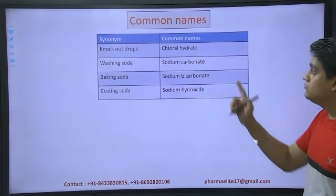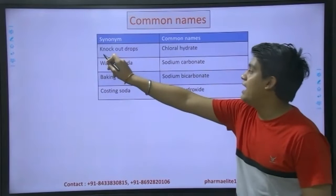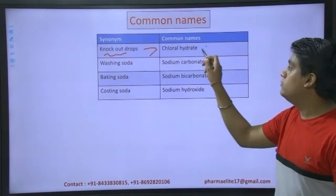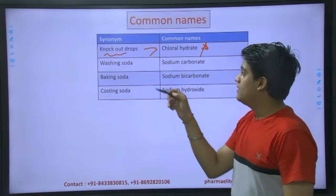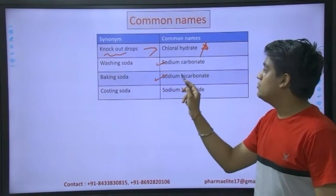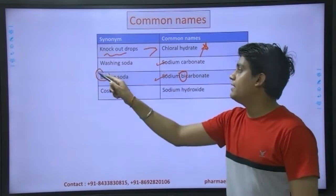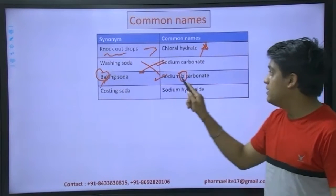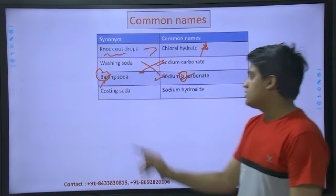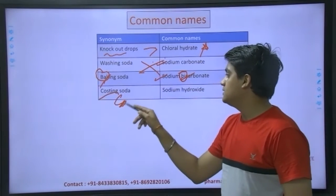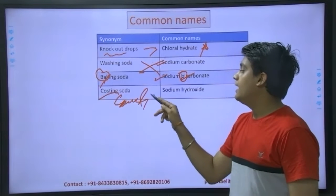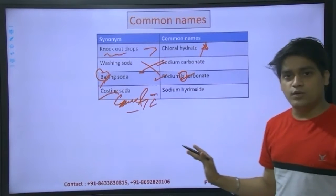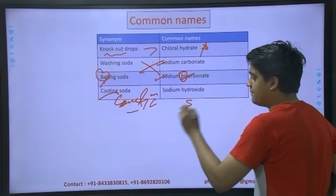To end up - the ones which you might have hardly heard about: knockout drops is chloral hydrate. Washing soda, baking soda - B for baking soda, B for bicarbonate - don't mix it. B for baking soda, B for soda bicarbonate. It doesn't end over here.